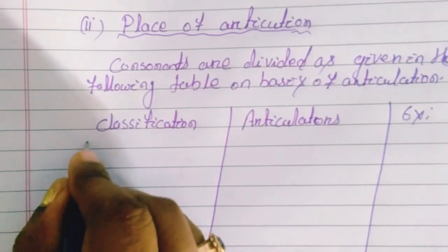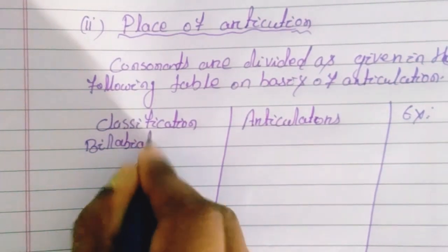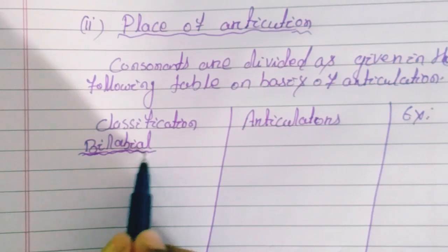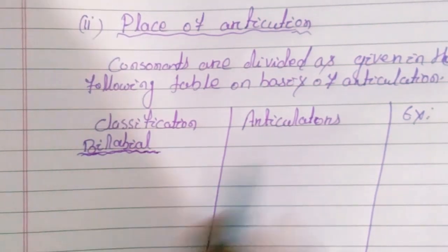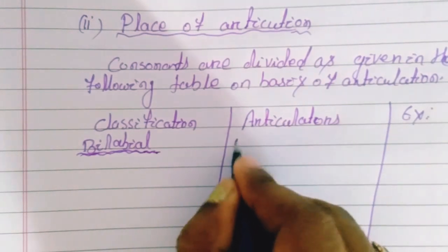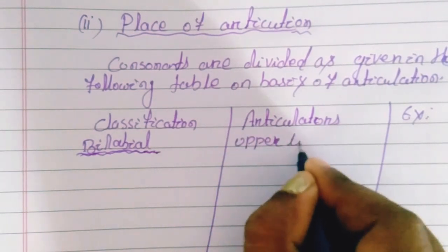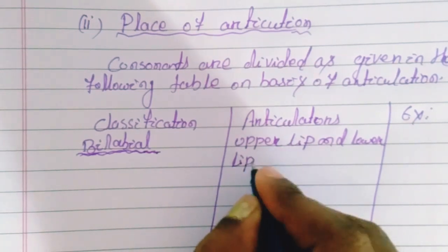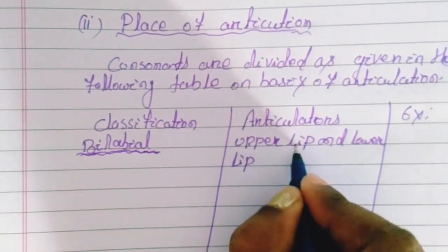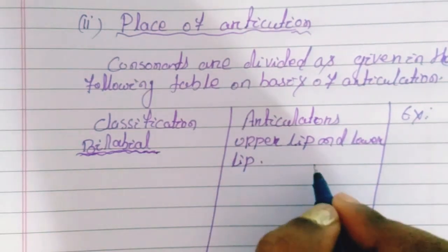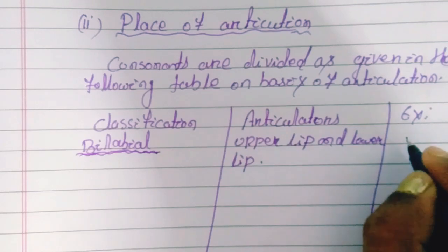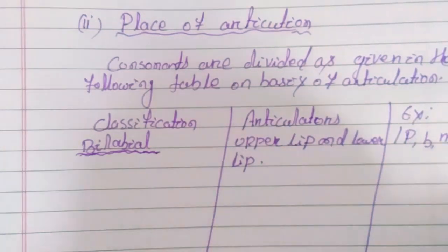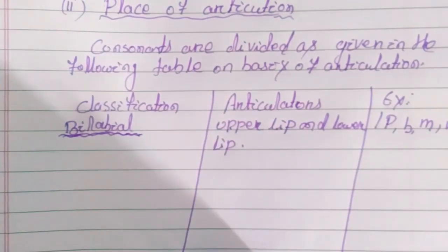On the basis of place of articulation, the first category is bilabial. Bilabial sounds are articulated with the upper lip and lower lip. Examples of bilabial sounds are the /b/ sound, /p/ sound, and /m/ sound.